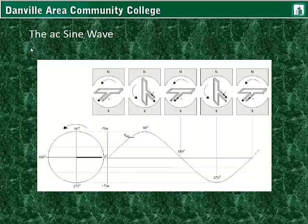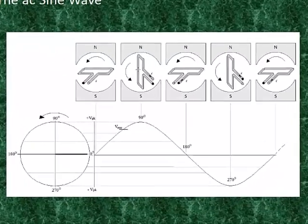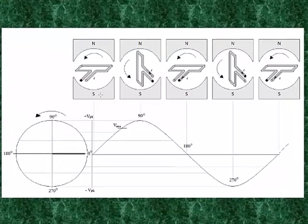Having watched the video on AC and DC generators: with an AC generator, as the coil is flat within the field and it is not cutting any magnetic field lines going from north to south, no voltage or current flow would be produced.